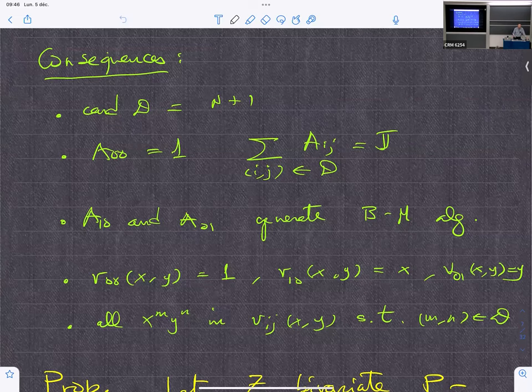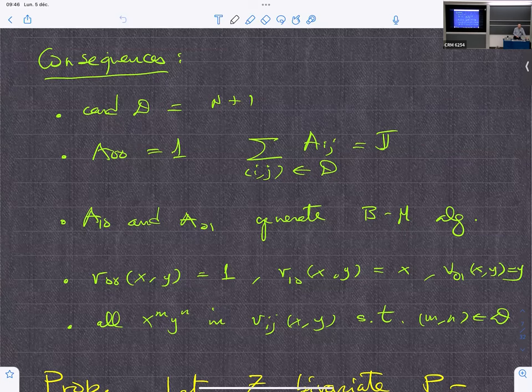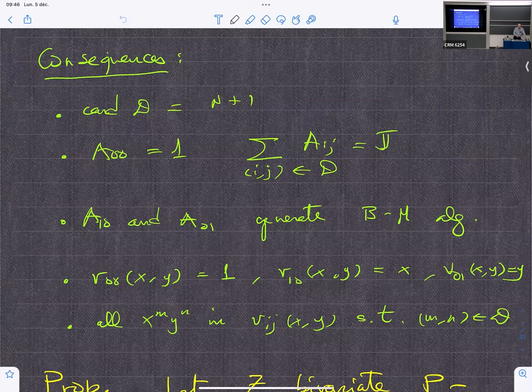So you see that it will define different domains in that plane. Now, we say that a polynomial is alpha-beta compatible of the degree (i,j) if all, if (i,j), of course, appears, and all the other monomials are lower than (i,j) in that order.